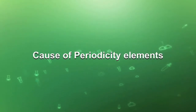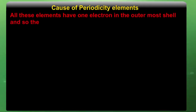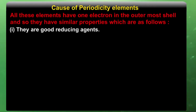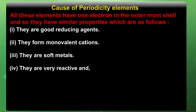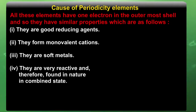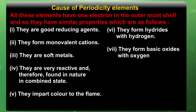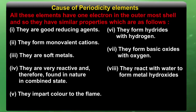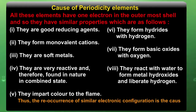Let us understand what is the cause of periodicity of elements. All these elements have one electron in the outermost shell and so they have similar properties: they are good reducing agents, they form monovalent cations, they are soft metals, they are very reactive and therefore found in nature in combined state. They impart color in the flame, and they form hydrides with hydrogen. They form basic oxides with oxygen and react with water to form metal hydroxide and liberate hydrogen. Thus the co-occurrence of similar electronic configuration is the cause of periodicity in properties of elements.